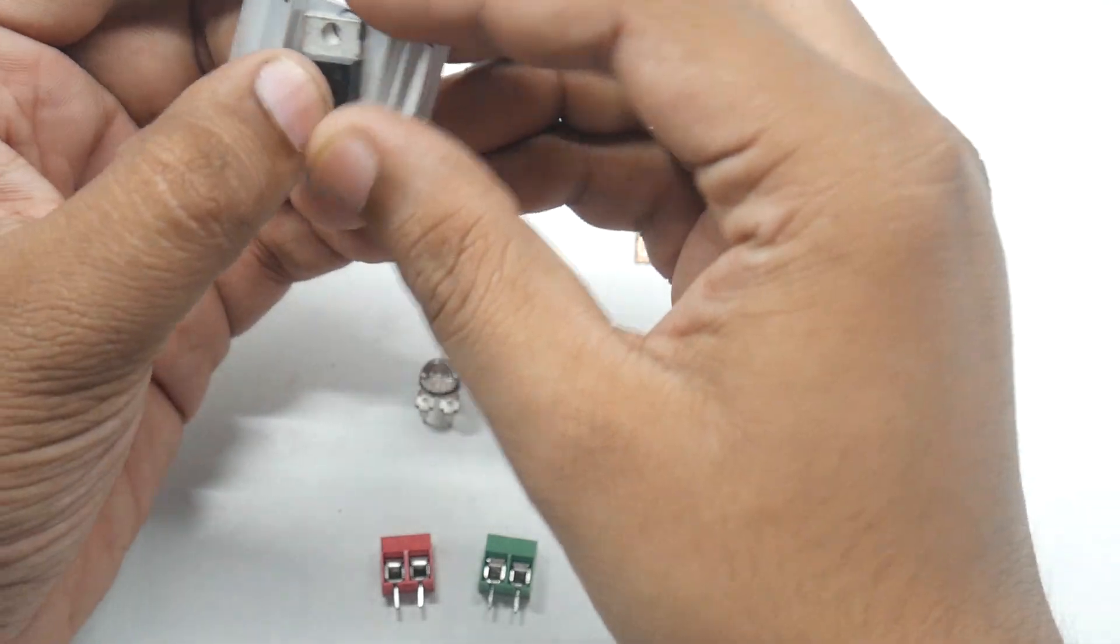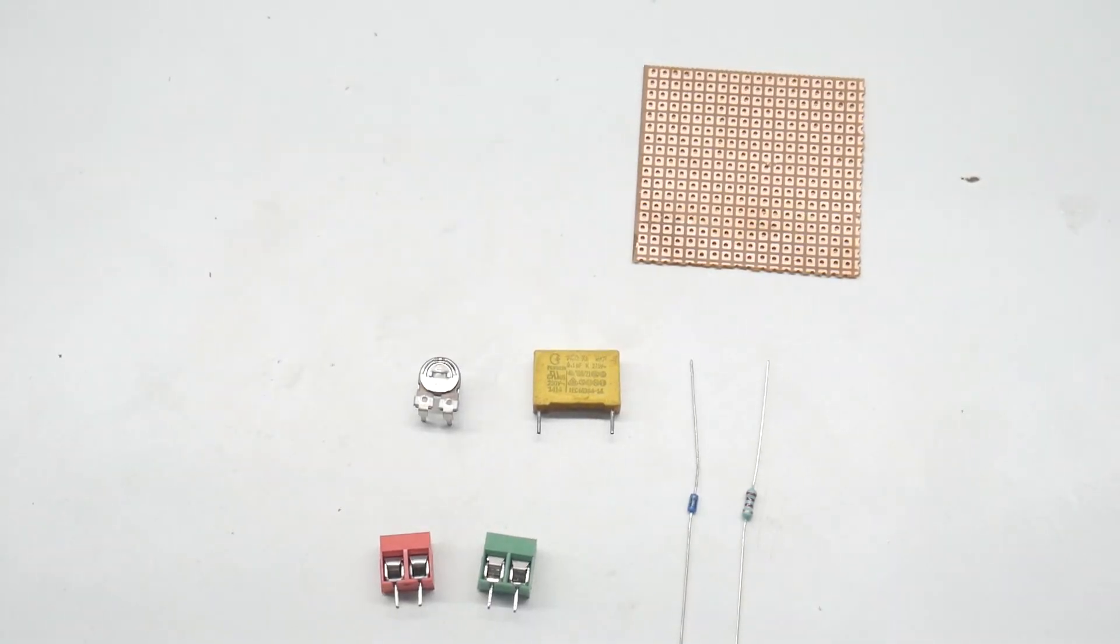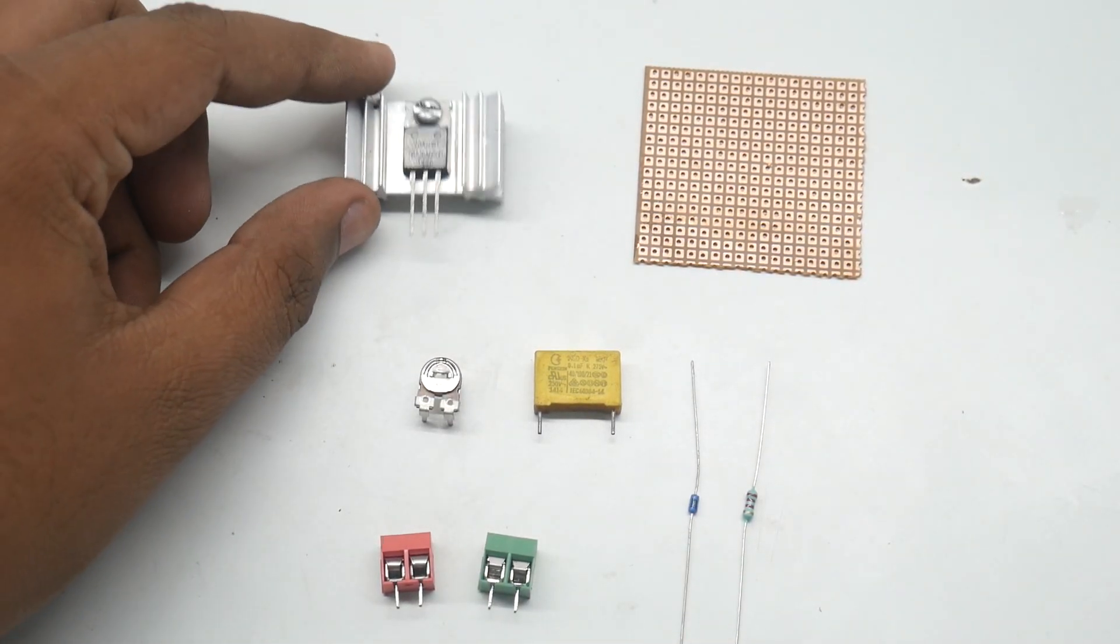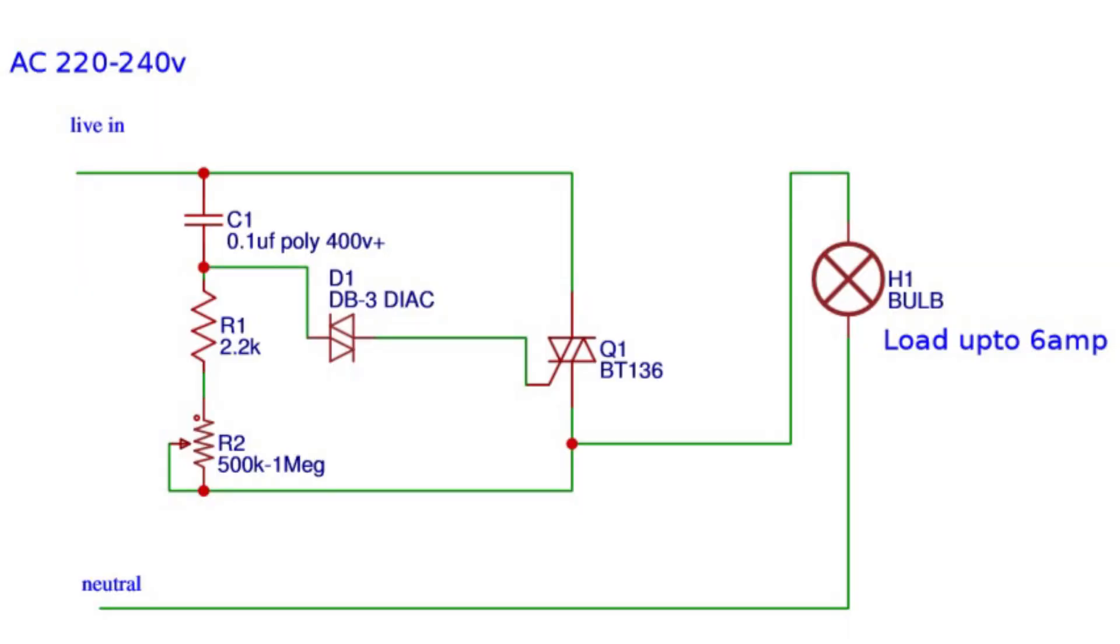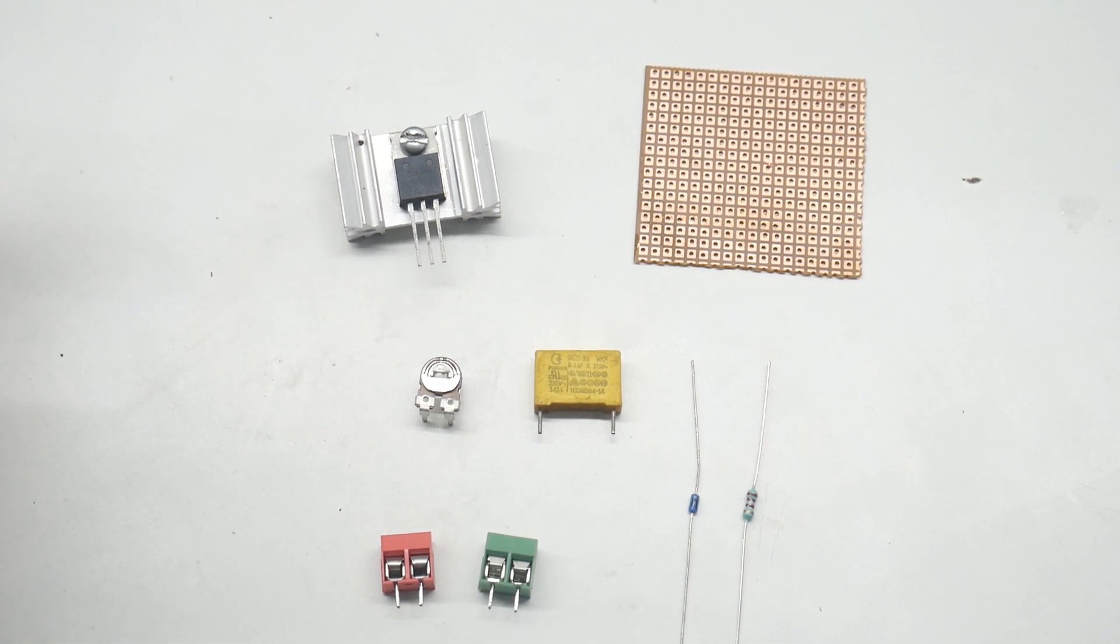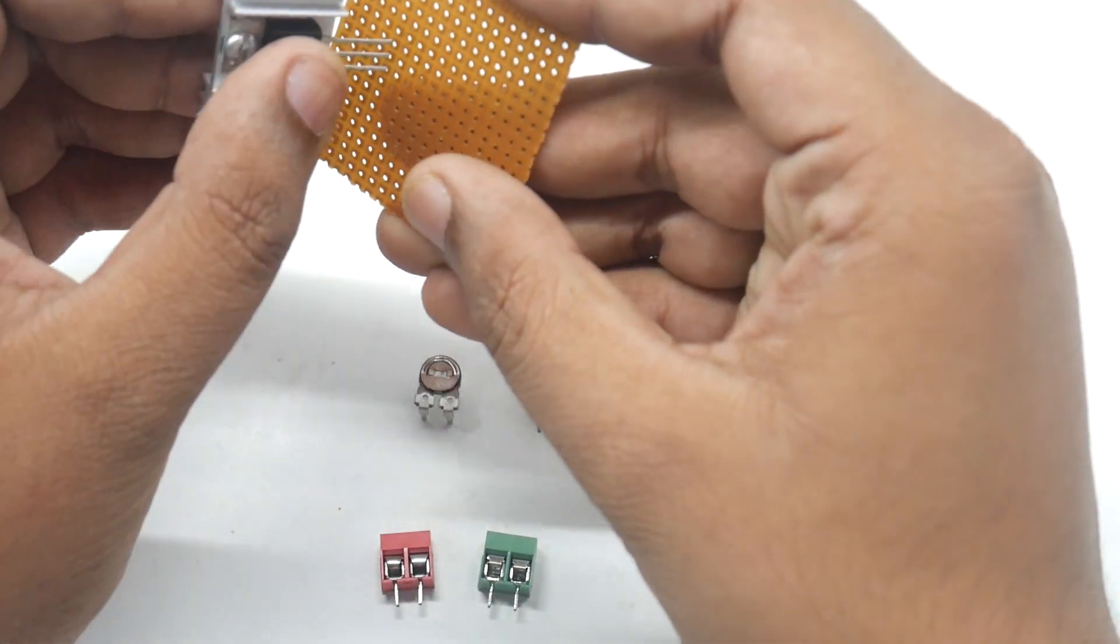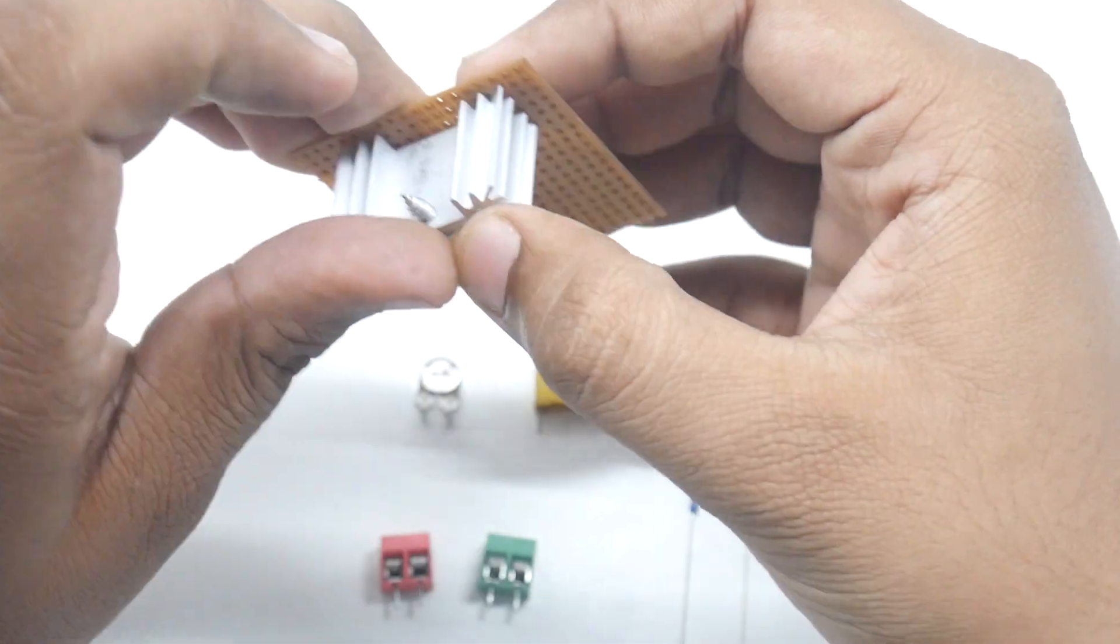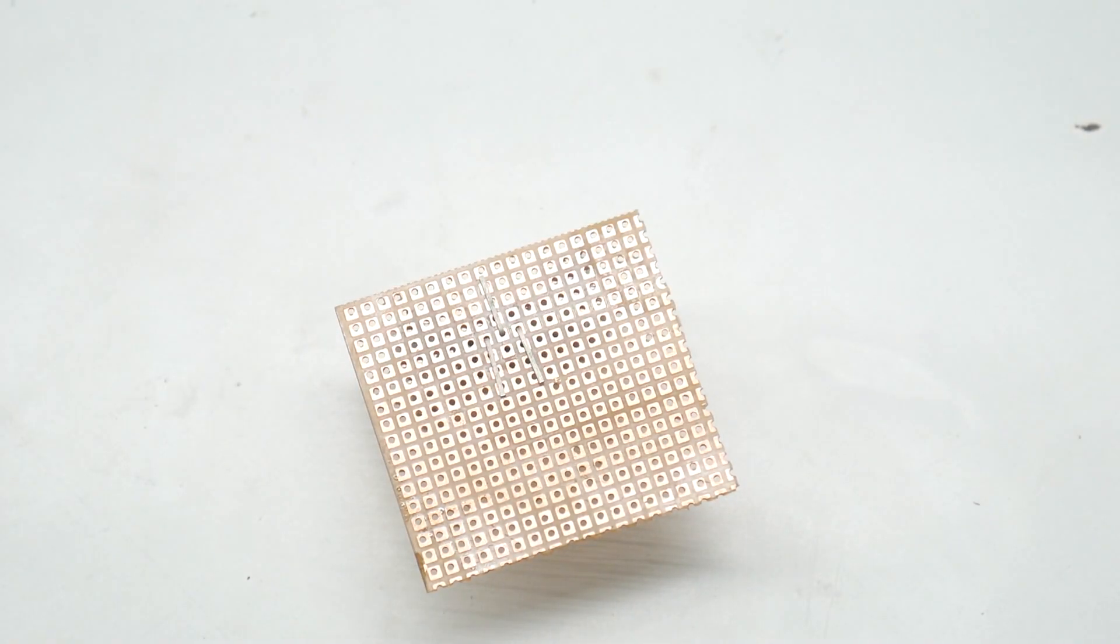Now we have just attached the heatsink on BT136. First of all you can see the diagram, this is our simple BT136 fan controller or the AC dimmer circuit. So the first thing is we need to fix this thing on our board like this. Now we will do the soldering.